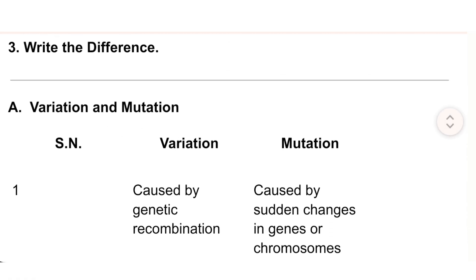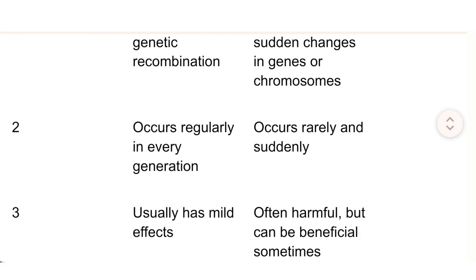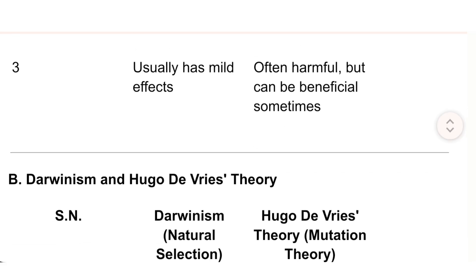Write the differences. A) Variation vs Mutation: 1) Variation is caused by genetic recombination; mutation is caused by sudden changes in genes or chromosomes. 2) Variation occurs regularly in every generation; mutation occurs rarely and suddenly. 3) Variation usually has mild effects; mutation is often harmful but can sometimes be beneficial.